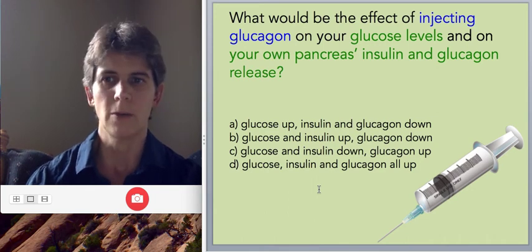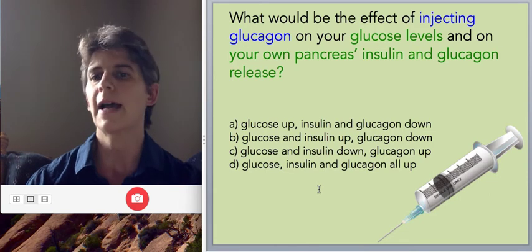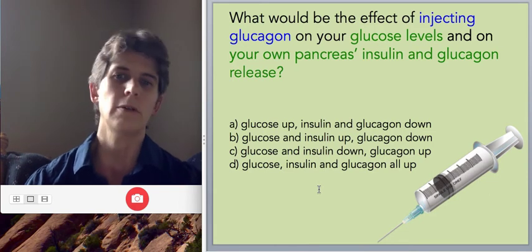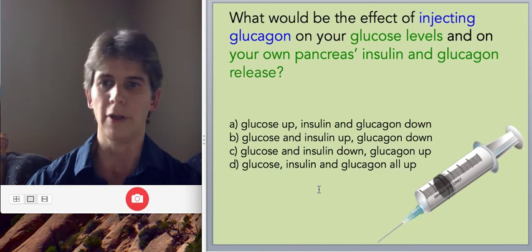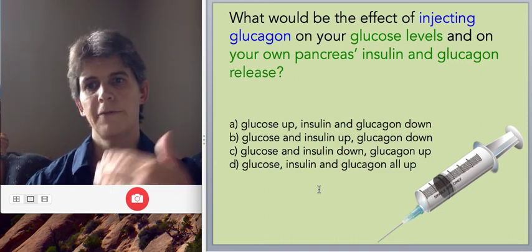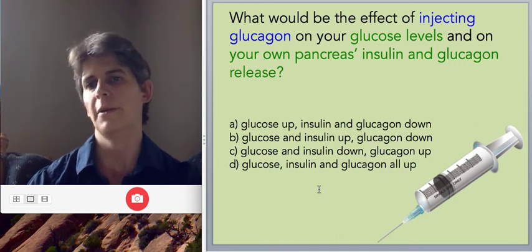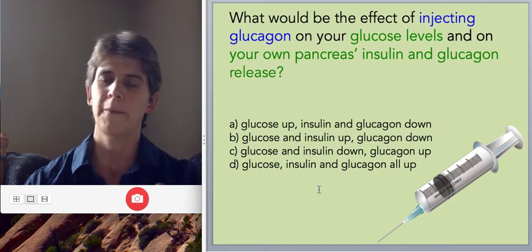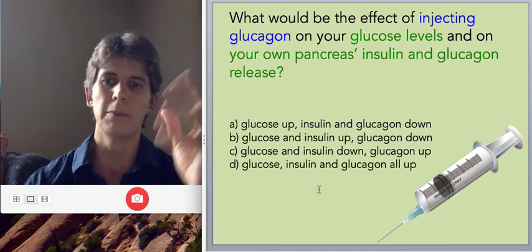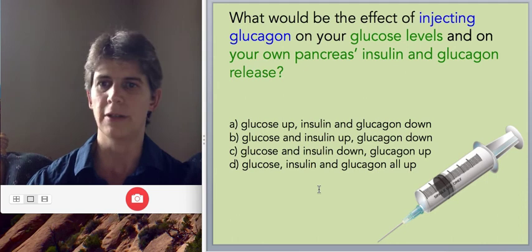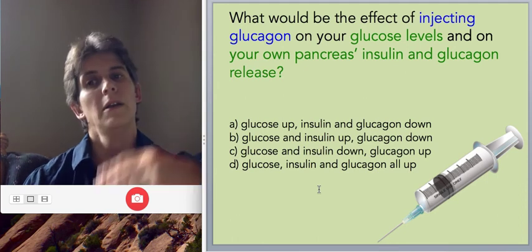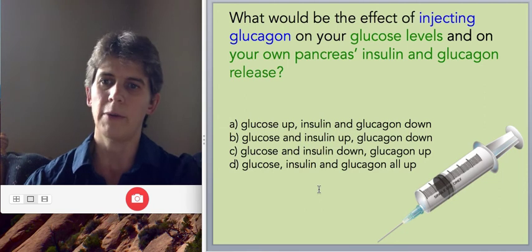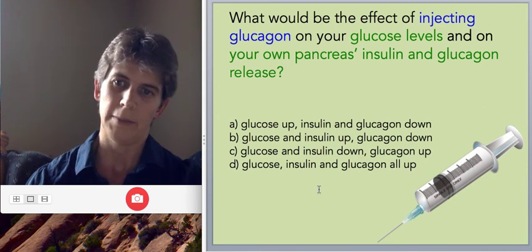Okay, again, the first thing you want to think about is what's going to happen to glucose. Well, we know glucagon's job is to tell the liver to release glucose into the blood. So the first effect of this injection is going to be to raise blood glucose levels. And then we know that high blood glucose levels, assuming I injected you with enough glucagon, if the blood glucose level gets above 100, then we would expect insulin to be stimulated.